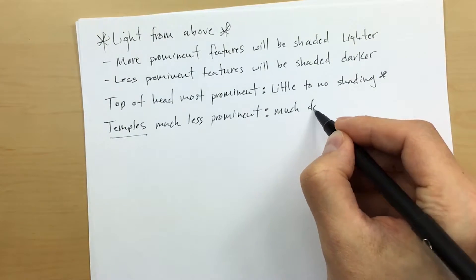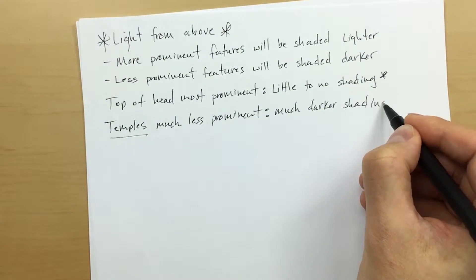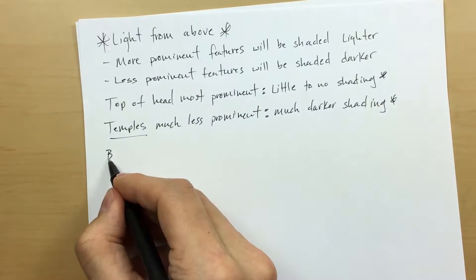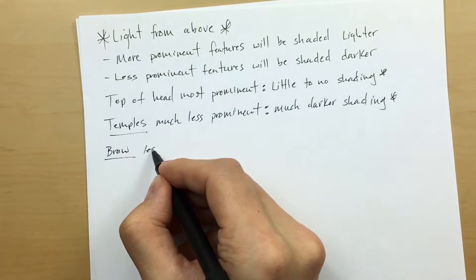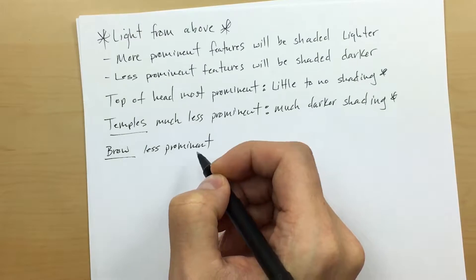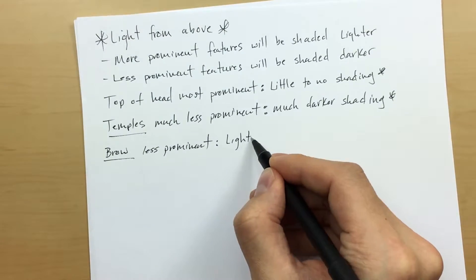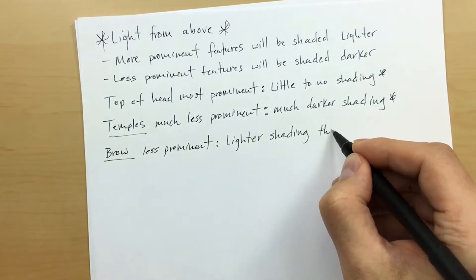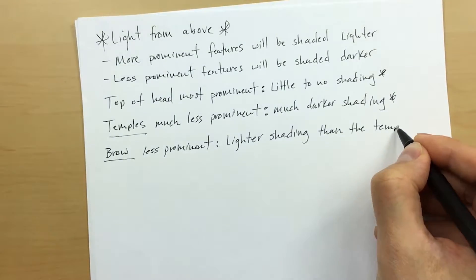Now the brow is going to be less prominent and because of that you are going to want to have lighter shading on the brow than on the temples, and this will help give your drawing that three-dimensional look as far as your shading is concerned.